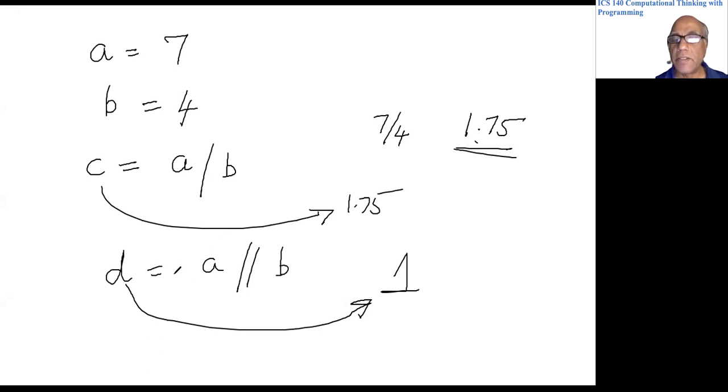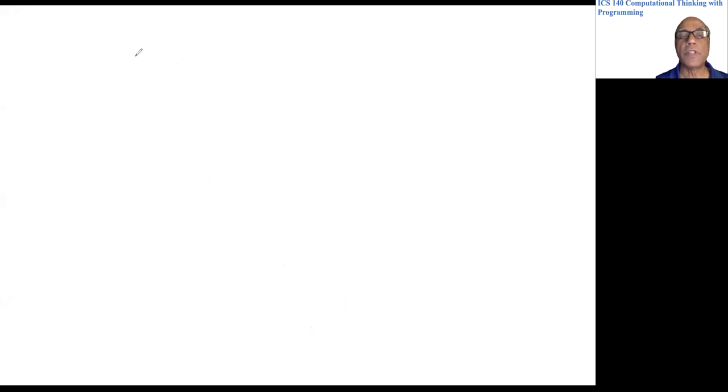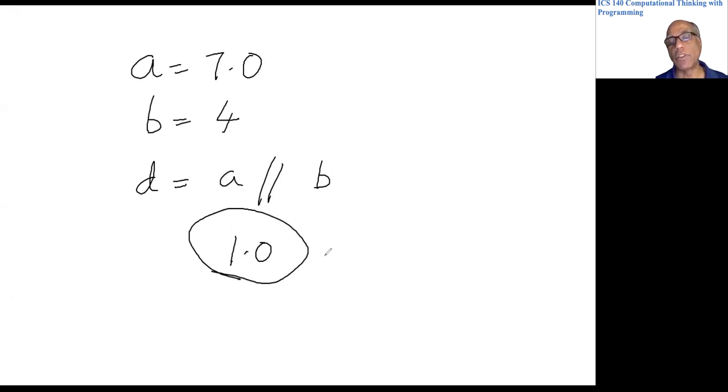But there is a little catch. What is that? Let's see the next. Suppose a equals 7.0, b equals four, and we write d equals a slash slash b. Since a is 7.0, this will actually bring back 1.0 as opposed to one, so this will be a float. So that is something to be noted.